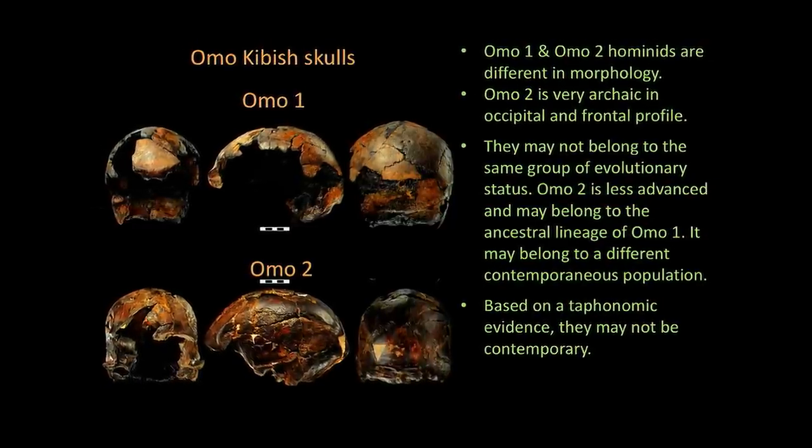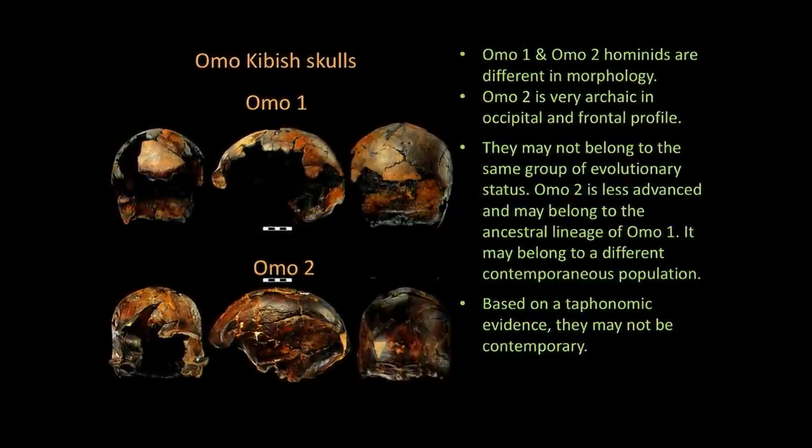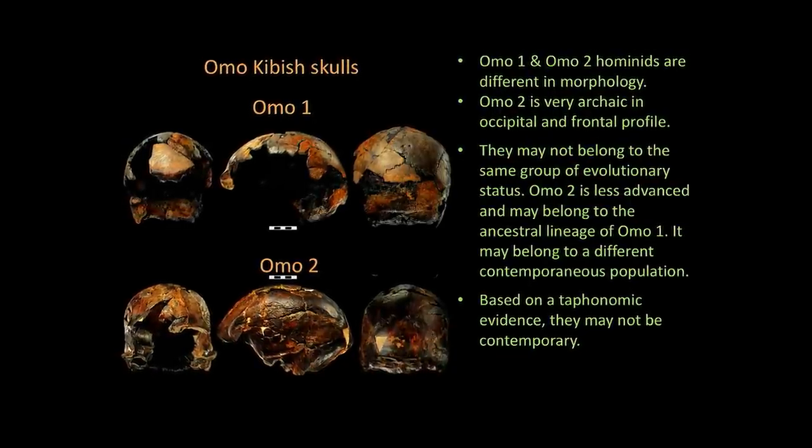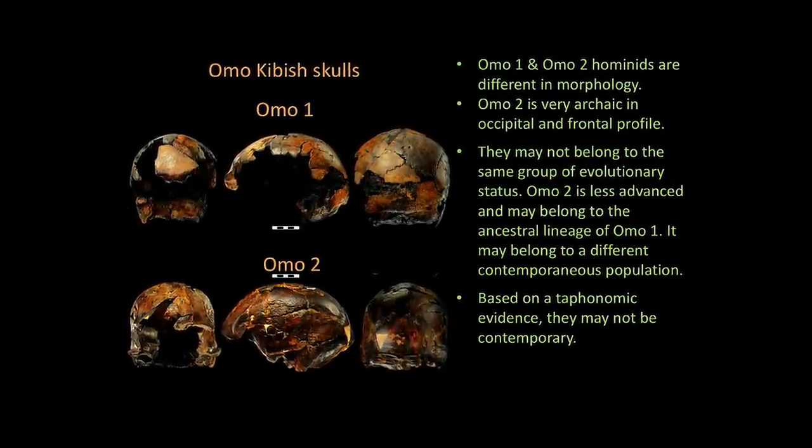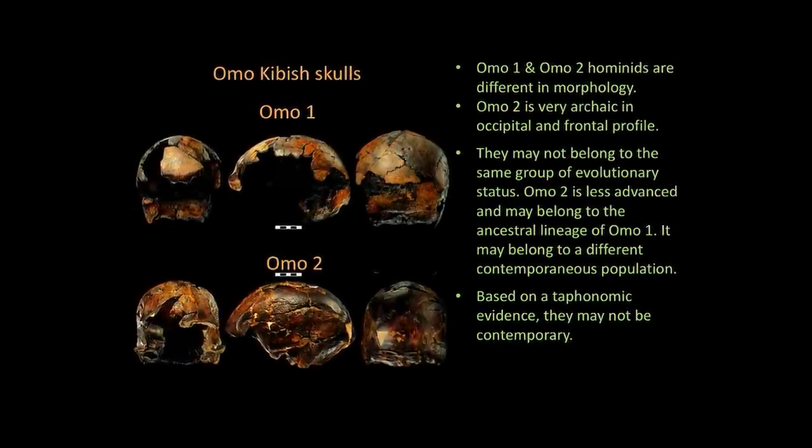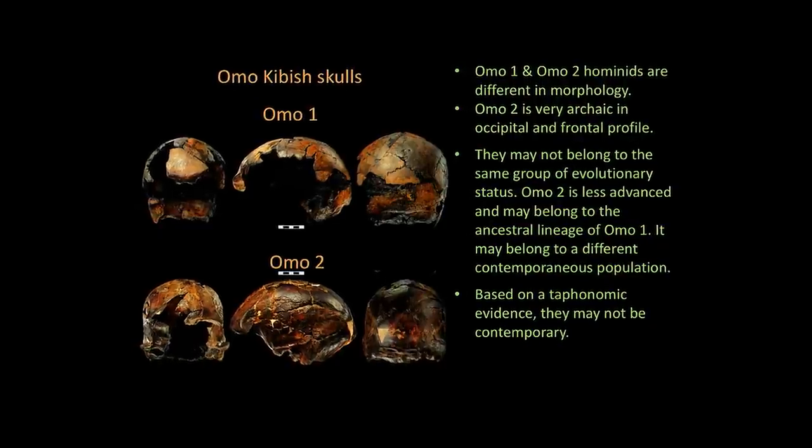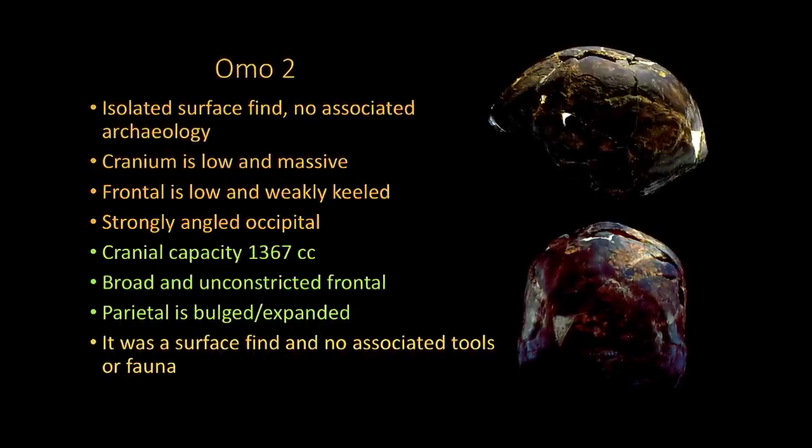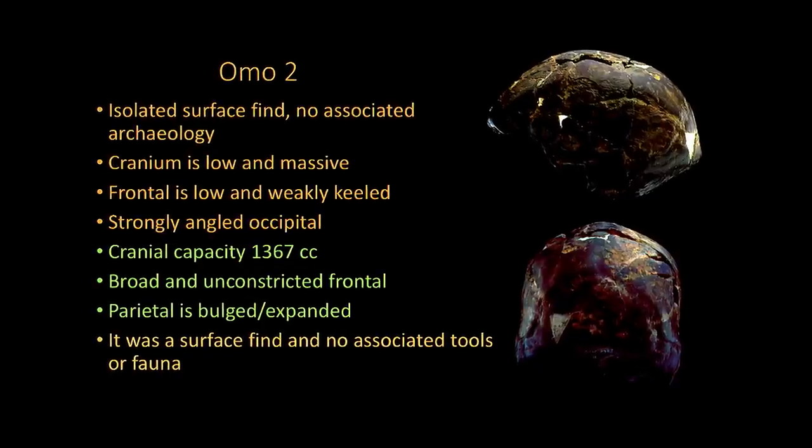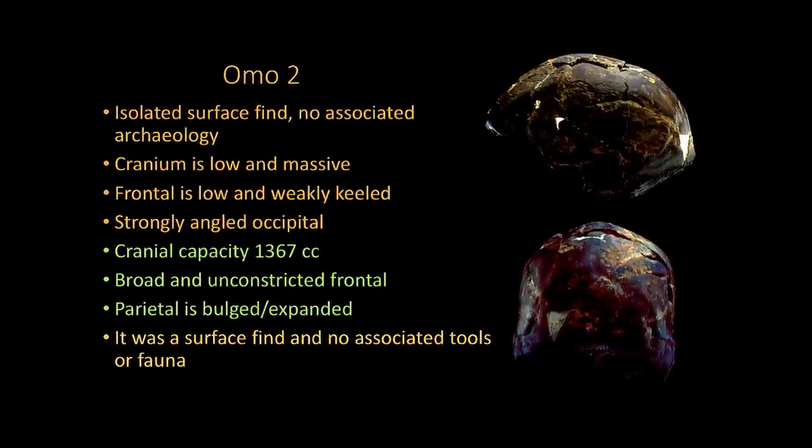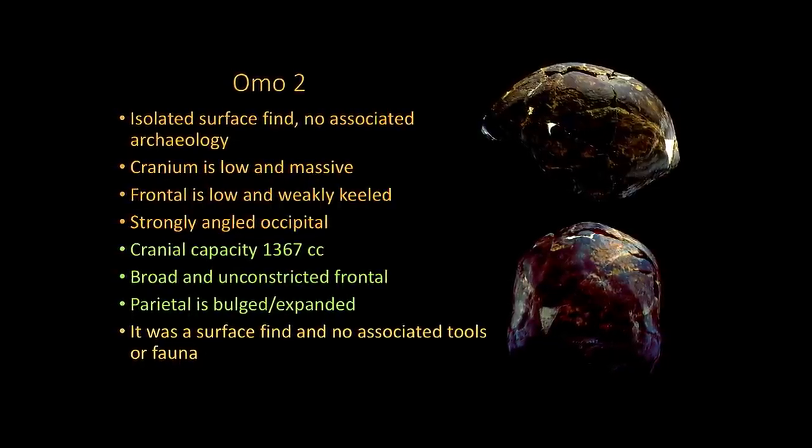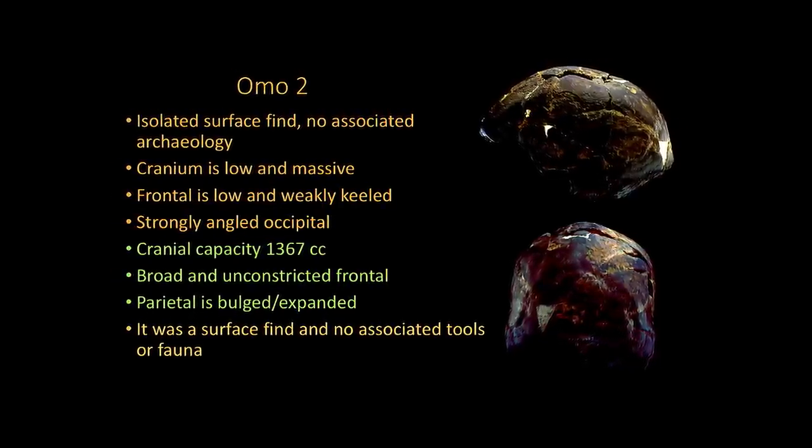Two of the oldest modern skulls were found at Omo Kaibish in southern Ethiopia in 1967. Known as Omo 1 and Omo 2, they are dated to about 200,000 years old and have a mixture of archaic and modern features. Exactly what you would expect of an archaic human shortly before the evolution of anatomical modernity. Several other specimens from around eastern and southern Africa told a similar story. But the dates for Omo 2 are now disputed.